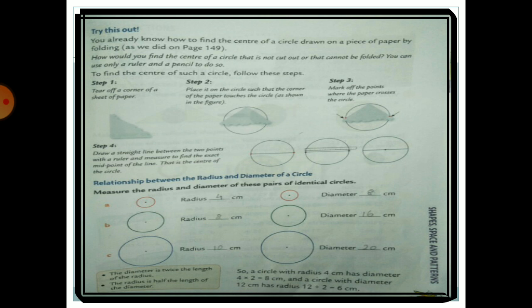Try this out: you already know how to find the center of a circle drawn on paper by folding, as we did on page 149. We found the diameter using the blue pencil, the radius using the red pencil, and also identified the quarter part of the circle.